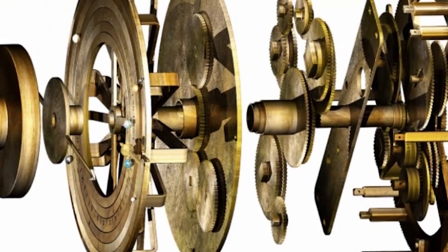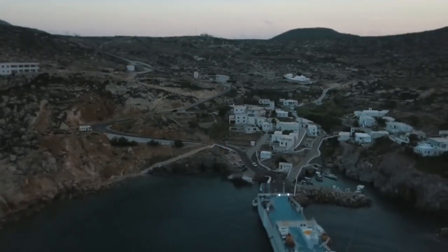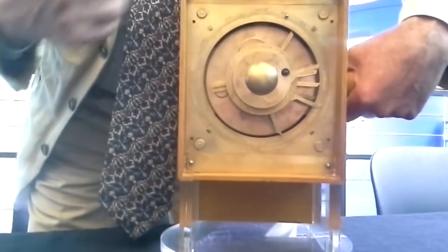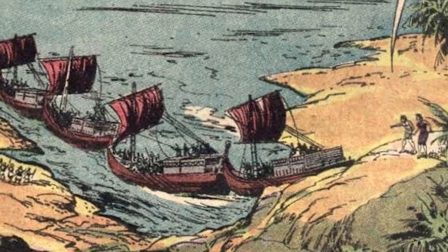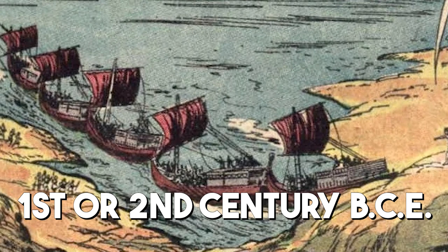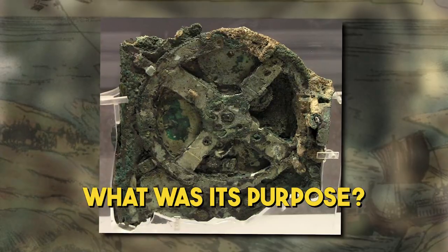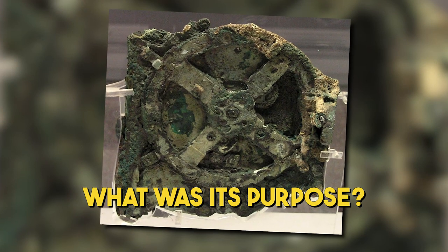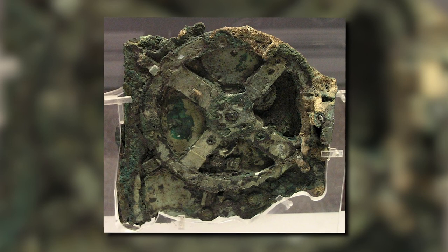The Antikythera mechanism, named after the island near where it was found, is a complex and intricate device made up of numerous gears, dials, and inscriptions. The mechanism, dated to around the first or second century BCE, is often described as the world's first known analog computer. But what exactly was its purpose? For over a century, scientists and historians have been striving to uncover the secrets of this ancient marvel.